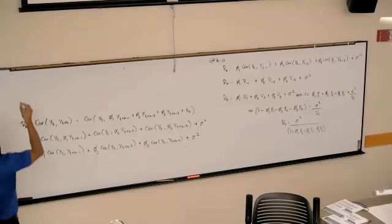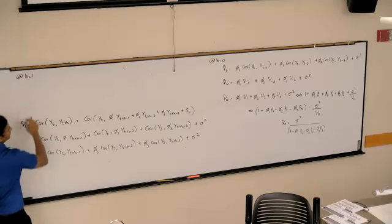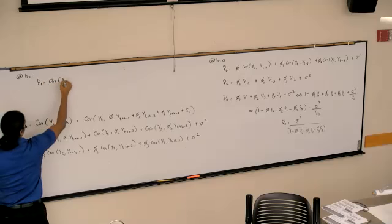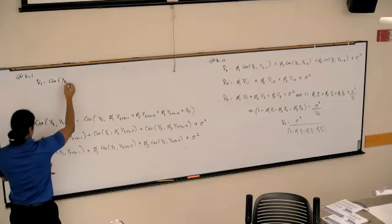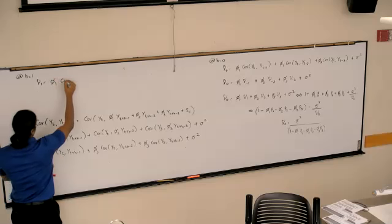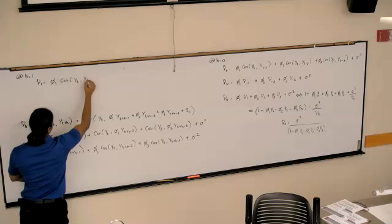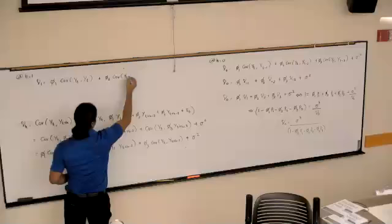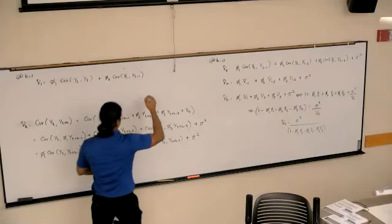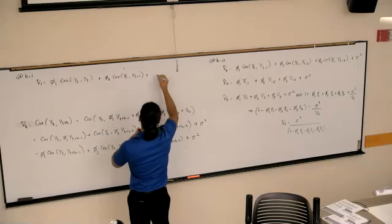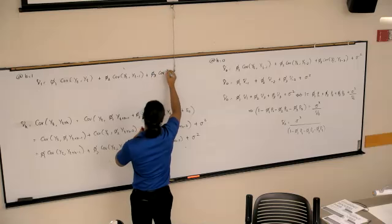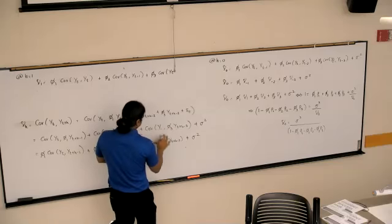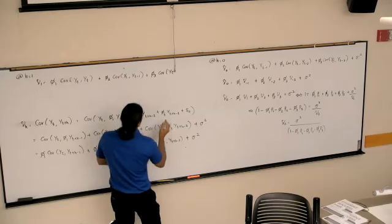So, we're going to plug in H is equal to 1. Gamma 1 would be phi 1 times covariance of YT comma YT, plus phi 2 covariance of YT comma YT minus 1, plus phi 3 covariance of YT comma YT minus 2.